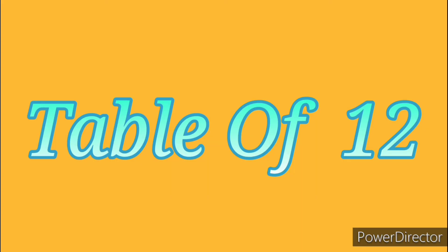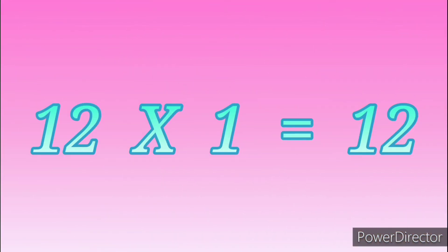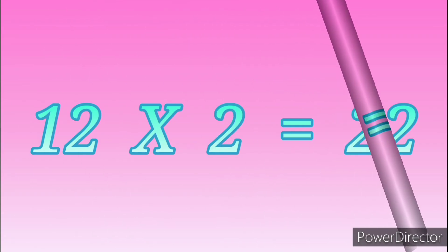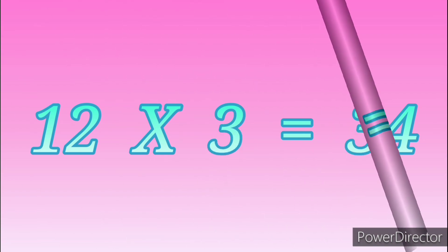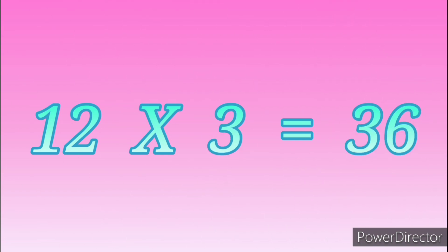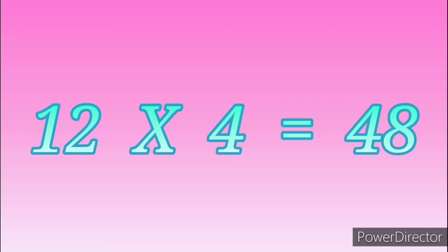Table of Twelve. Twelve ones are twelve. Twelve twos are twenty-four. Twelve threes are thirty-six. Twelve fours are forty-eight.